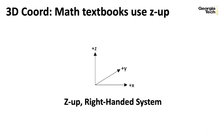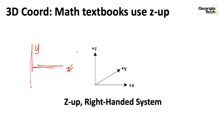For two-dimensional coordinates, things tend not to be highly controversial — usually X goes left and right, and Y goes up and down. However, when you enter the realm of three-dimensional graphics, things start to get very confusing because nobody settled on a consistent set of notations.